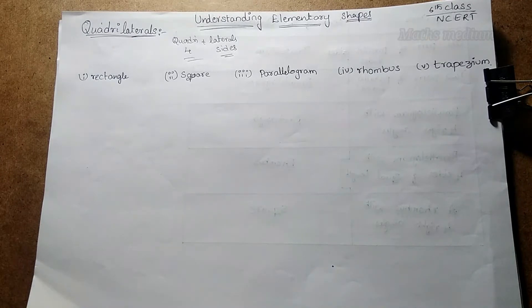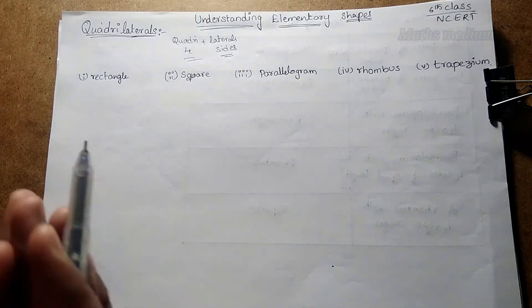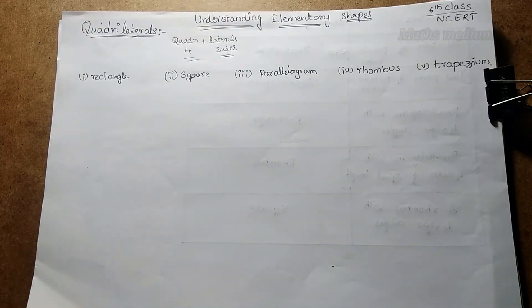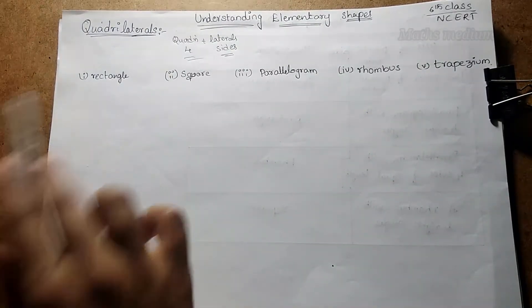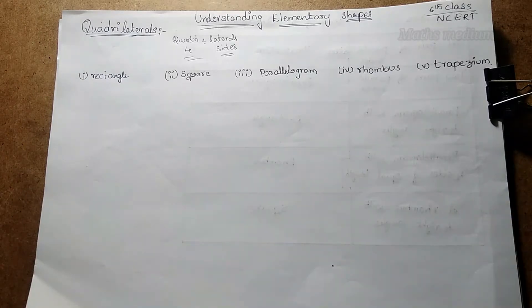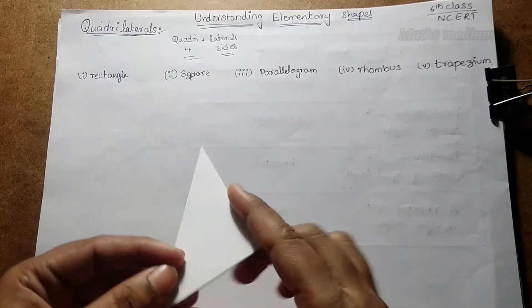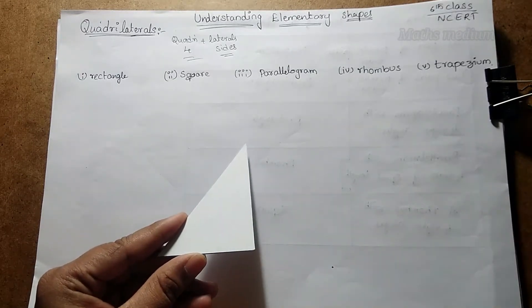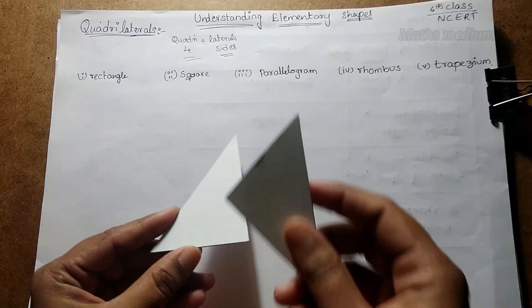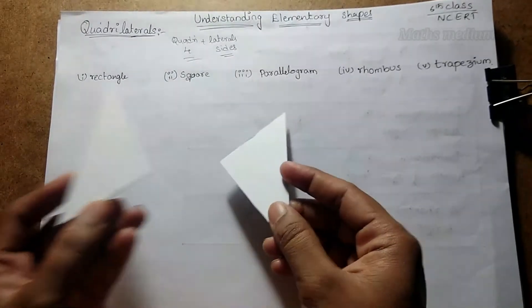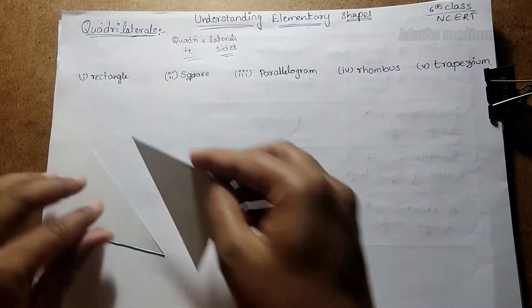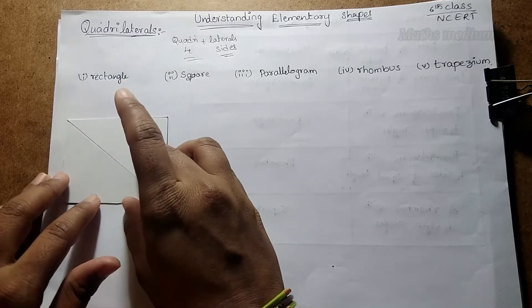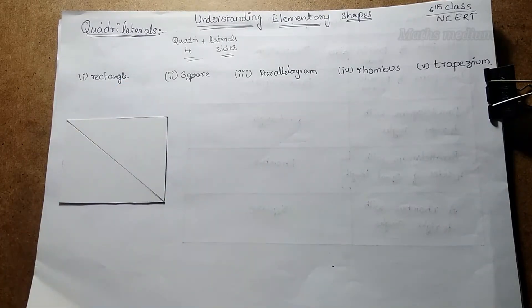Here are some quadrilaterals according to their shapes — rectangle, square, parallelogram, rhombus, and trapezium. Let's start with rectangle. If you take a set square — one with 30, 45, and 90 degrees — and take another set square and put the two set squares together, we get a rectangle.